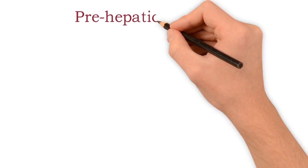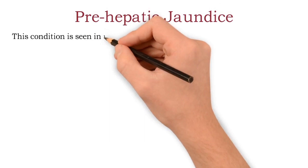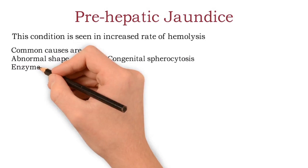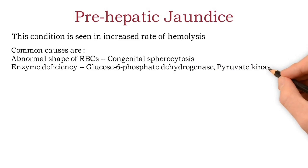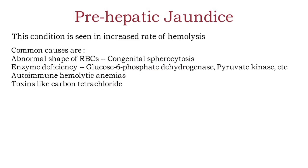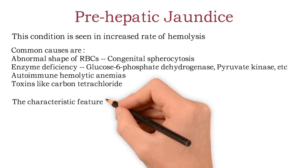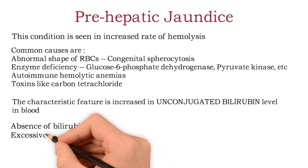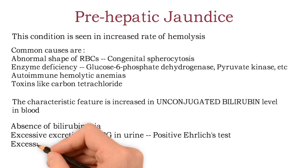Now, jaundice in adults. First, pre-hepatic jaundice: this occurs when there is an increased rate of hemolysis. Causes include abnormal shape of RBCs (congenital spherocytosis), enzyme deficiency such as G6PD deficiency or pyruvate kinase deficiency, autoimmune hemolytic anemia, or toxins like carbon tetrachloride. The characteristic feature is increased unconjugated bilirubin in blood. Other findings include absence of bilirubinuria, excessive excretion of urobilinogen in urine detectable by the Ehrlich test, and excessive excretion of urobilinogen and stercobilin in feces.